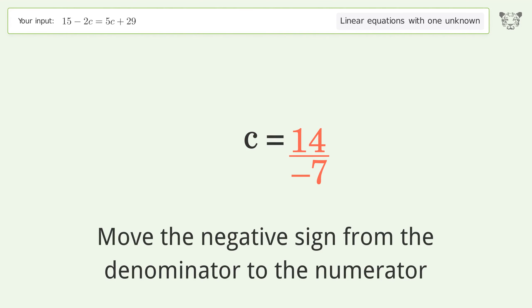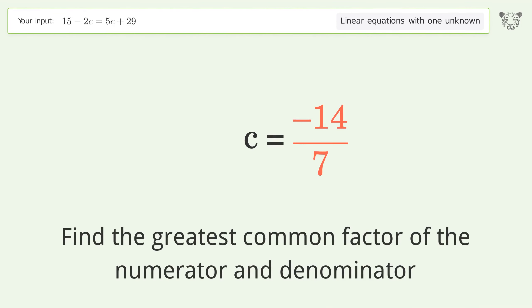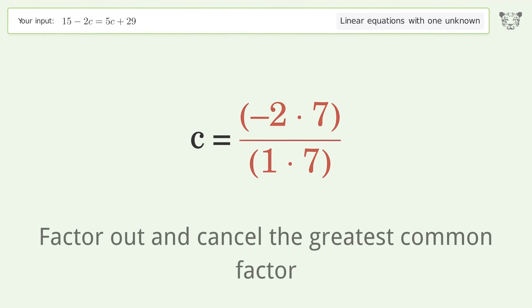Move the negative sign from the denominator to the numerator. Find the greatest common factor of the numerator and denominator. Factor out and cancel the greatest common factor.